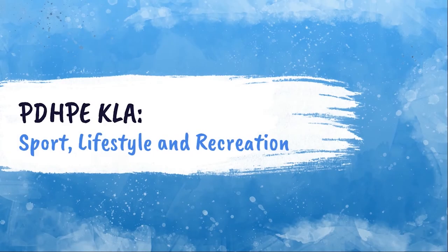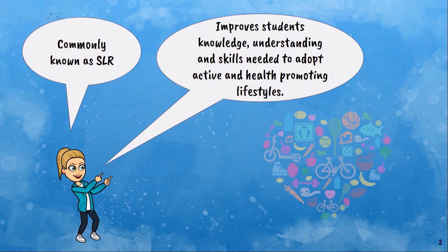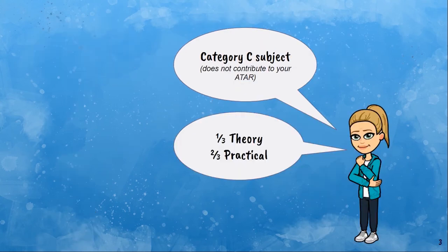One of the PDHPE subjects we offer at Wagga High School is Sport, Lifestyle and Recreation. It's a two-unit course that you can do in Year 11 and Year 12. The course is commonly known as SLR and it aims to improve students' knowledge, understanding, and skills needed to adopt active and health-promoting lifestyles. It's a Category C subject which does not contribute to your ATAR, but it can contribute to your preliminary Record of School Achievement and your HSC. The course is predominantly practical with a little bit of theory — two periods of theory and four periods of practical per week.